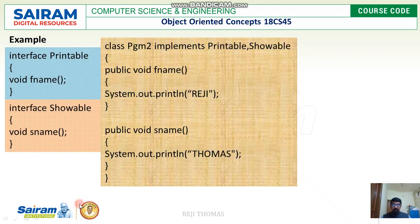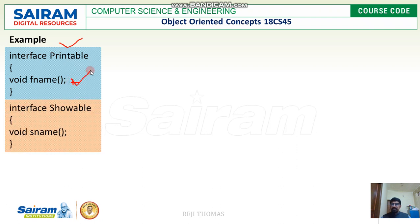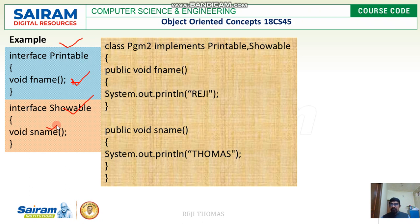Let us see a small example. We have an interface called printable — this is the first interface and it has a method called fname. Then we have a second interface called showable, and it also has a method without any definition or body. Now we are going to take a class which is going to implement both interfaces.